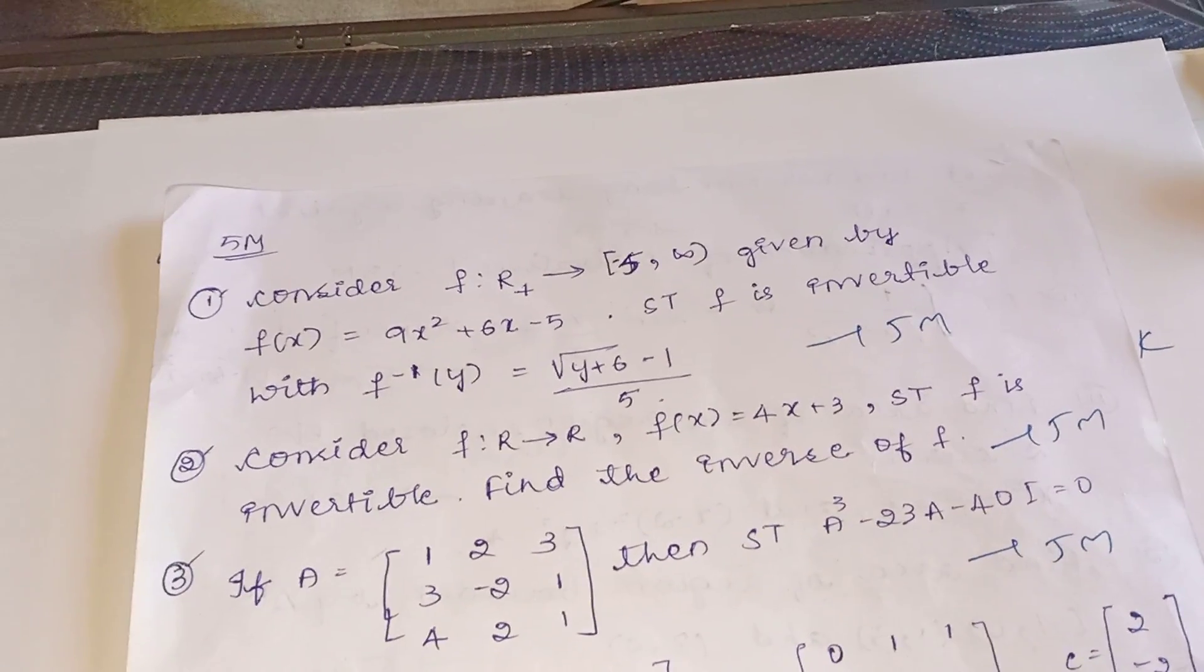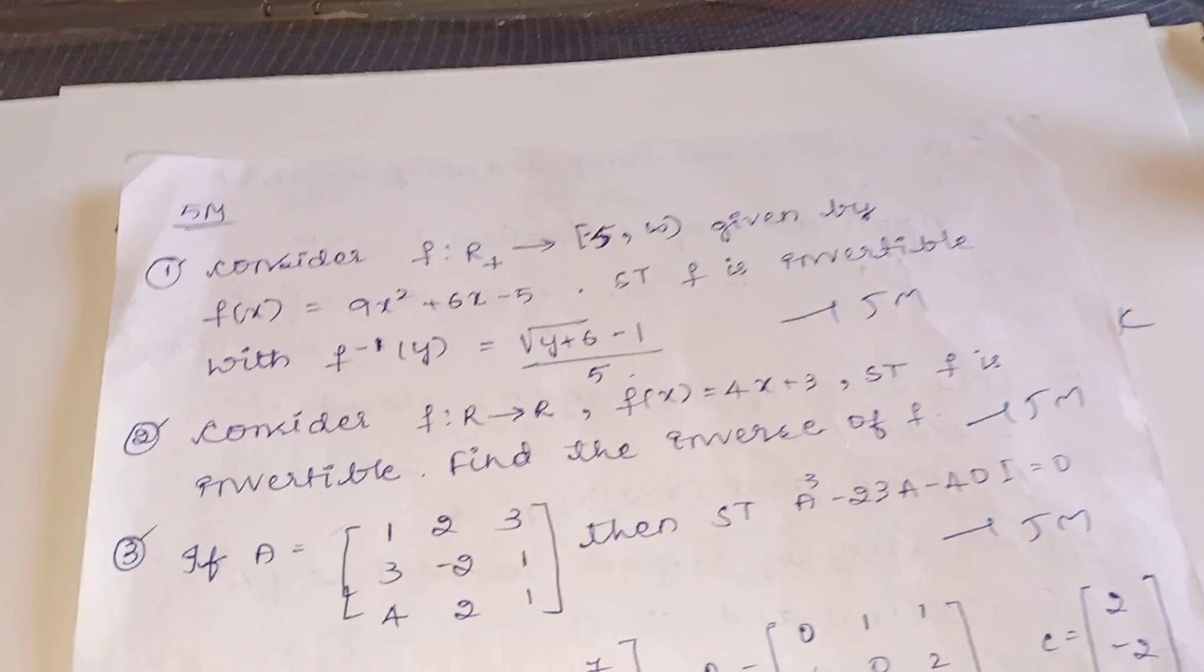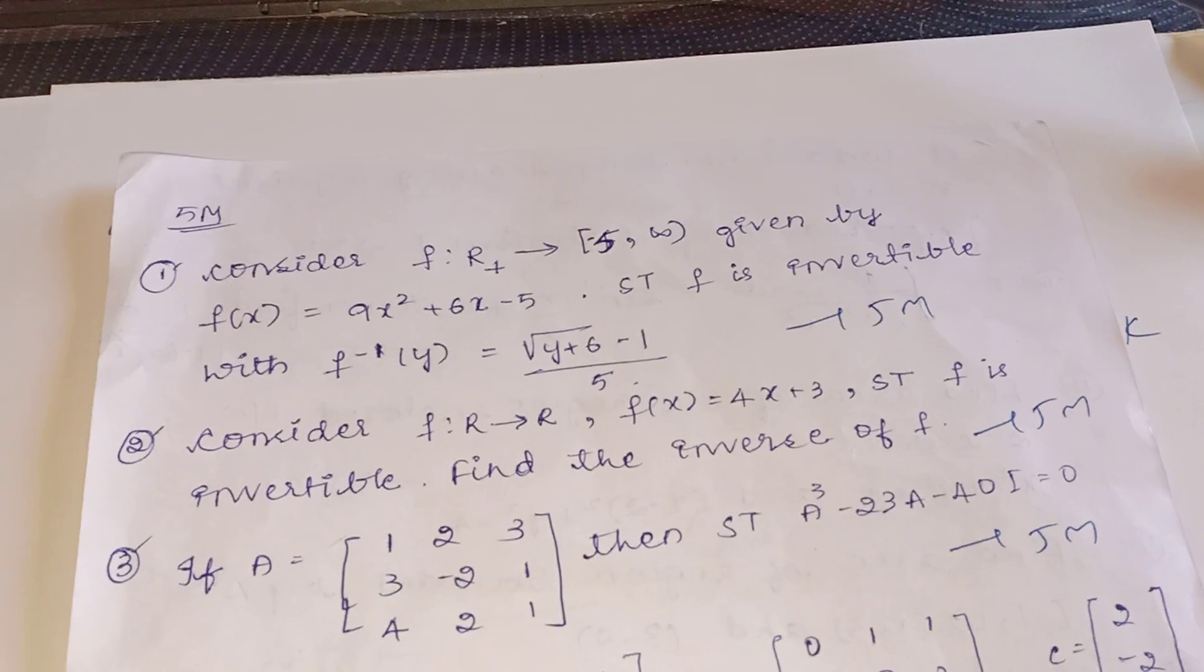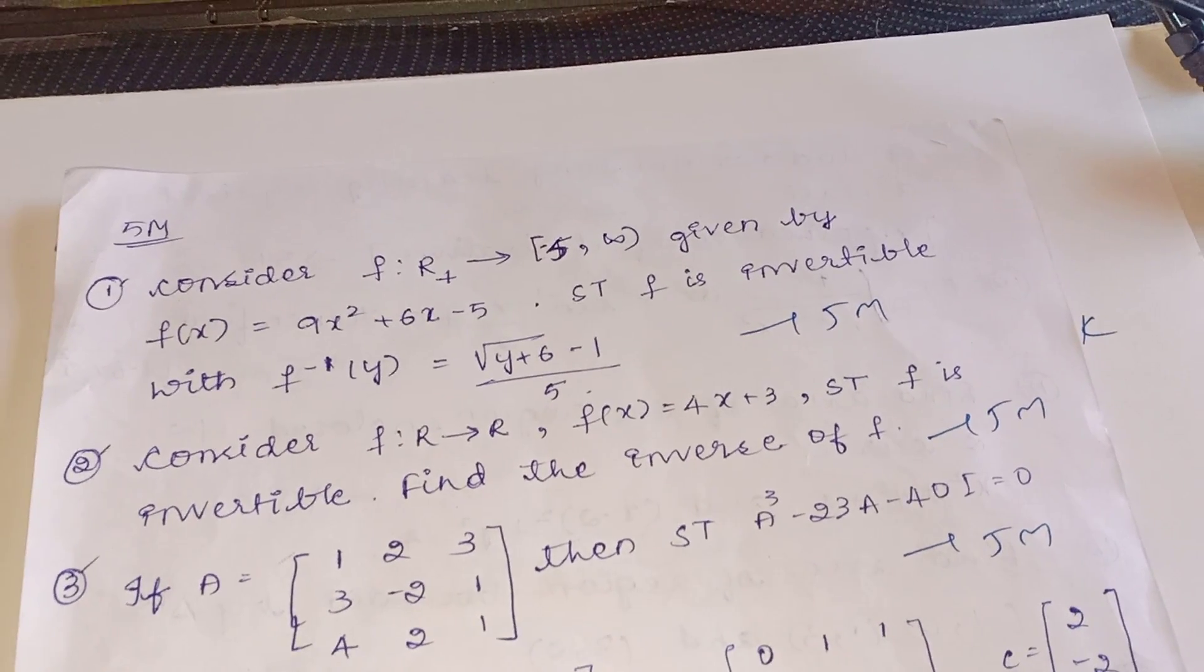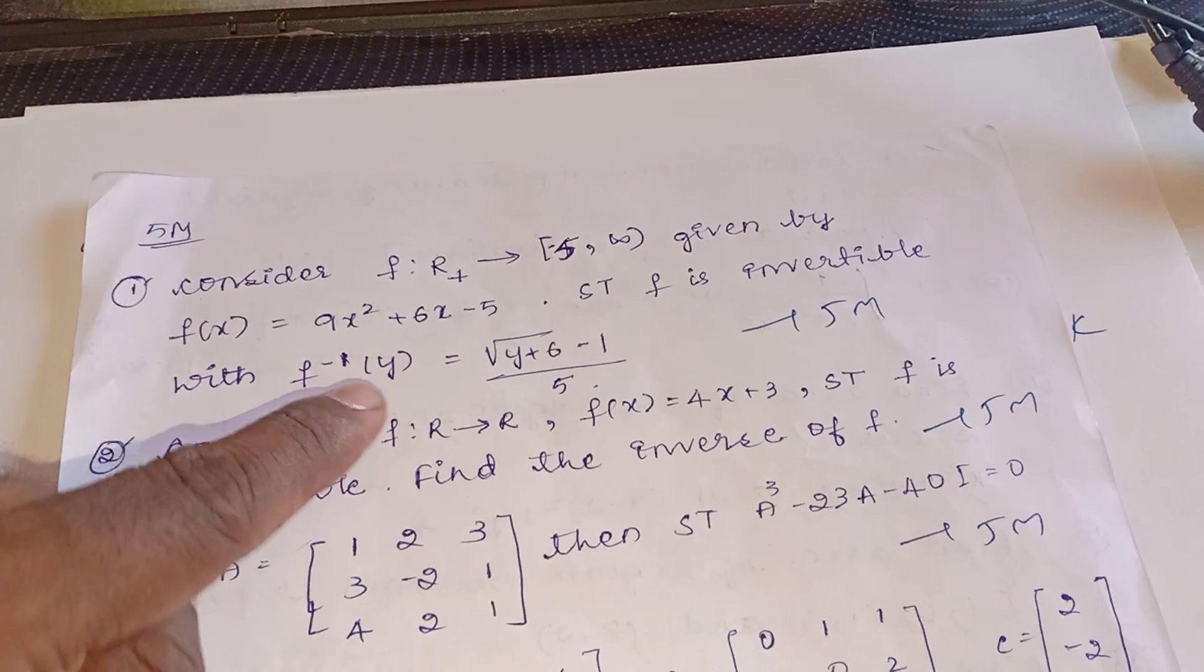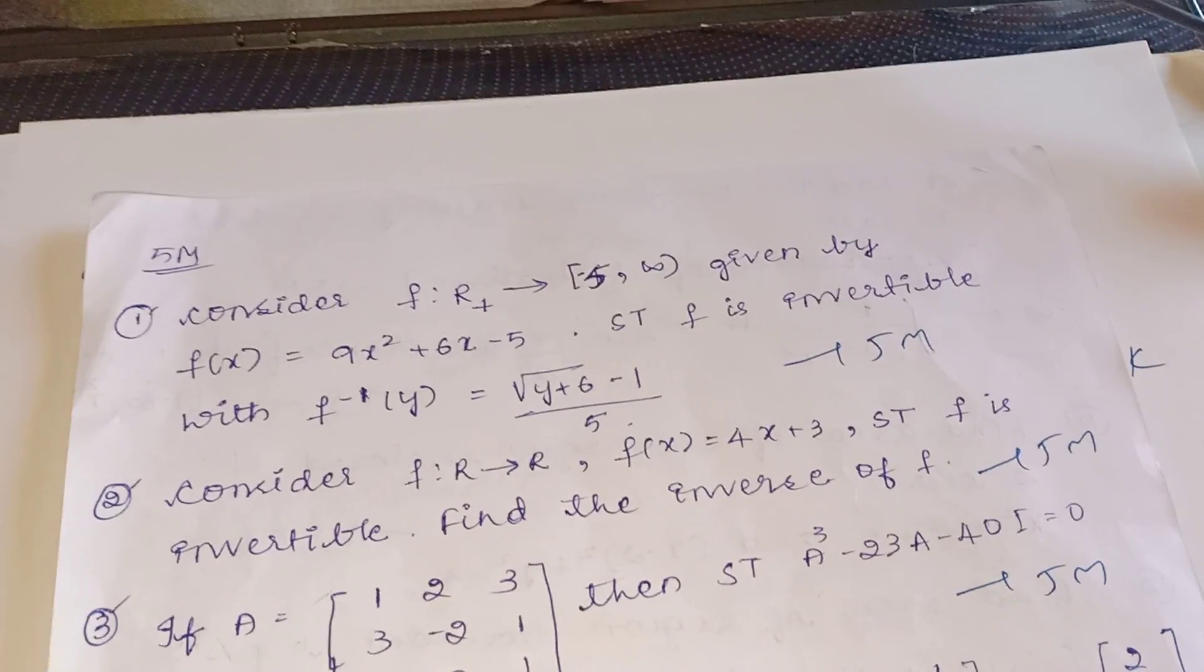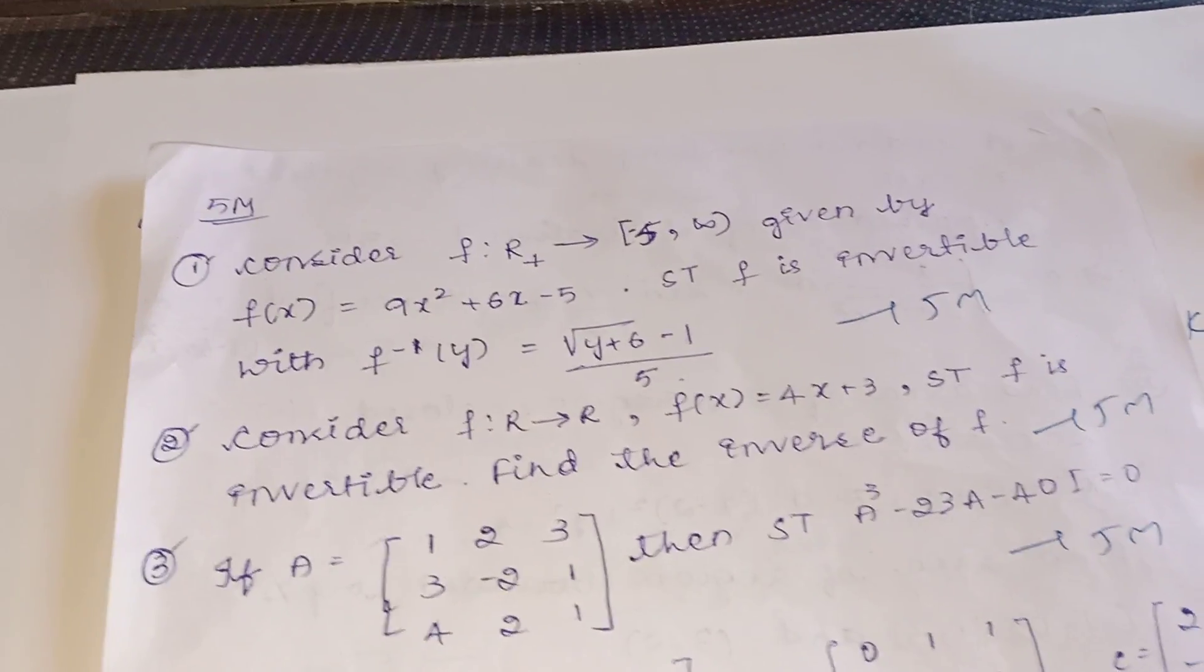Another question from relation functions is five marks: consider f maps R to R, f(x) = 4x + 3. Show that f is invertible, find the inverse of f. In this question, if one inverse they only given here, inverse not given. So out of these two models, any one model is compulsory for five marks.